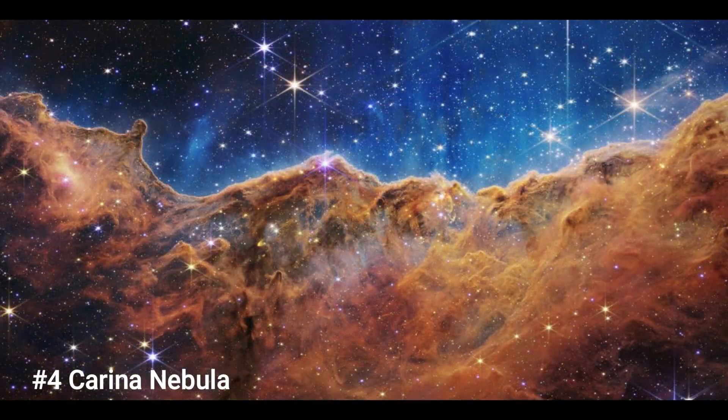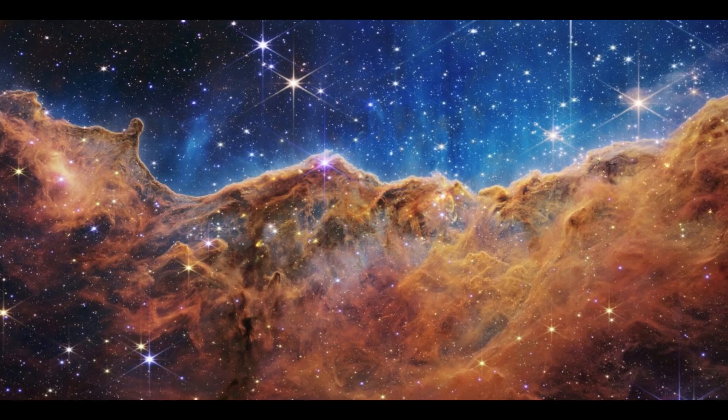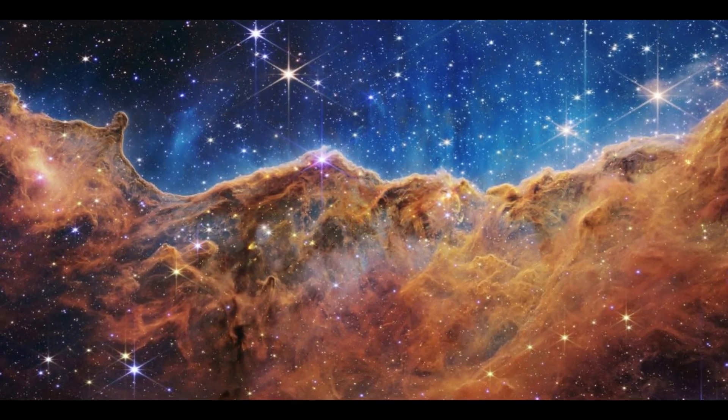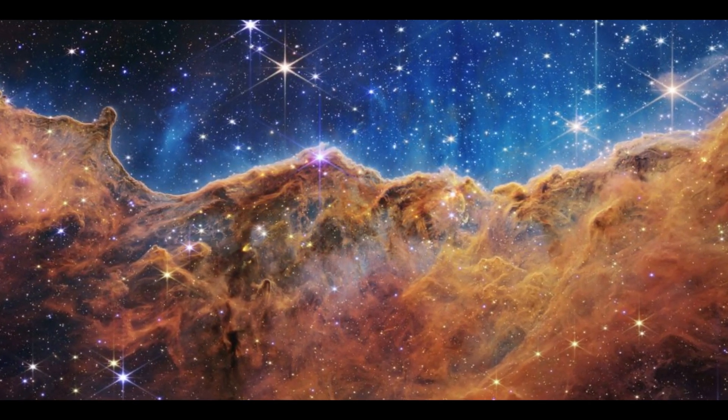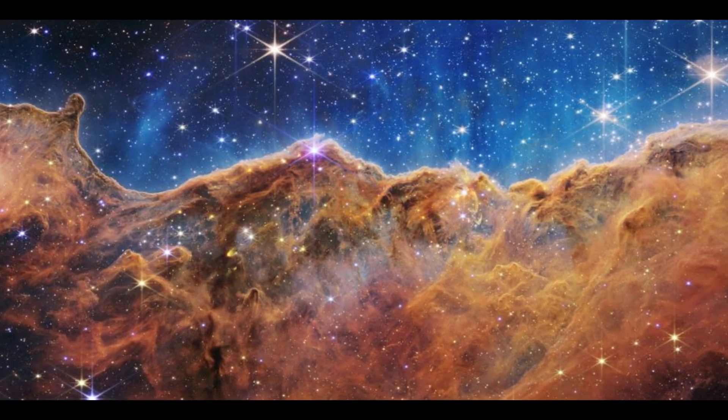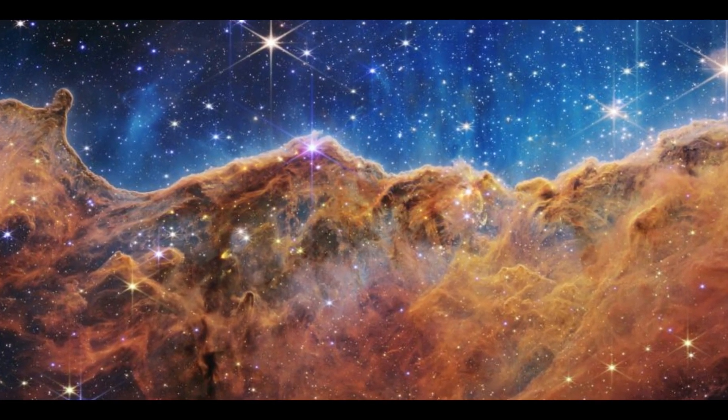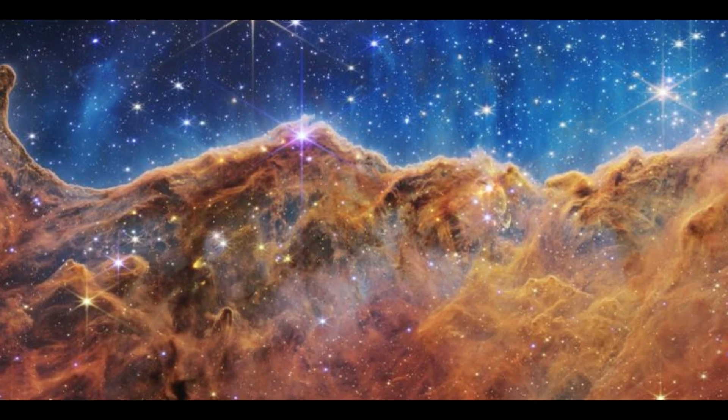Number 4. Carina Nebula. This image, which is undoubtedly the most well-known of the JWST's early releases. 7,600 light-years away from Earth, the Carina Nebula has a diameter of more than 300 light-years. The locations of the star's birthplaces and death knells are depicted in this stunningly coloured graphic.